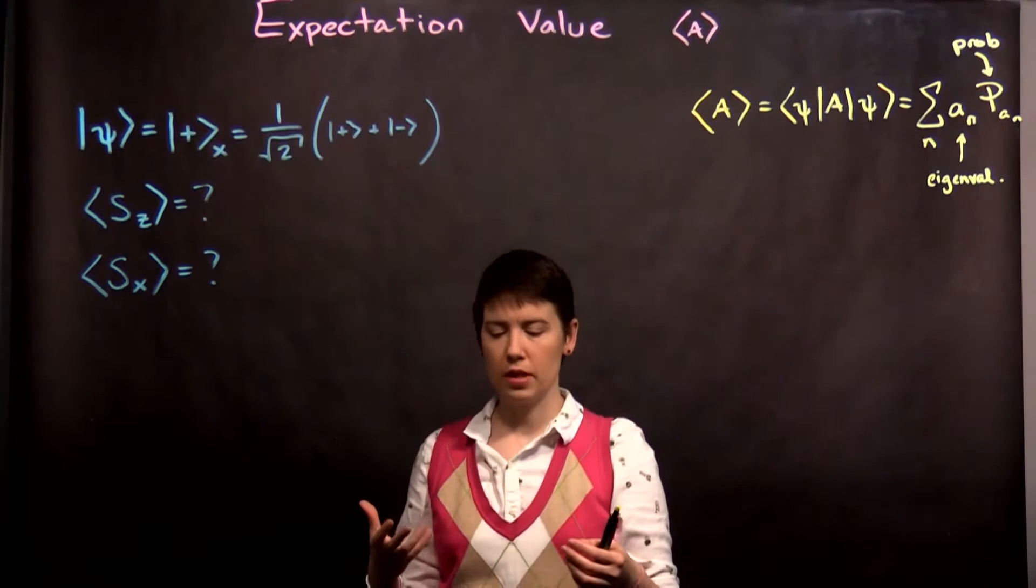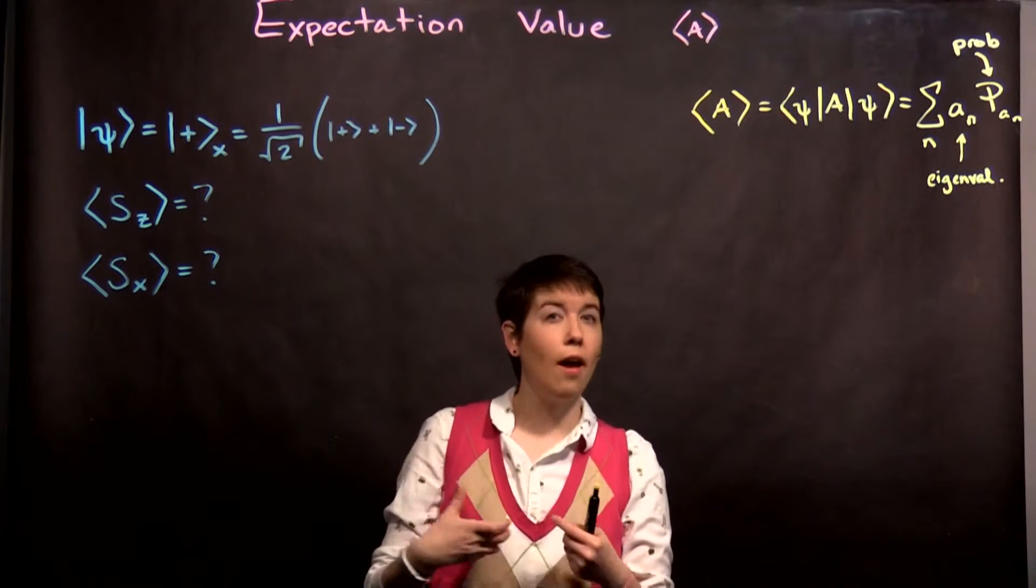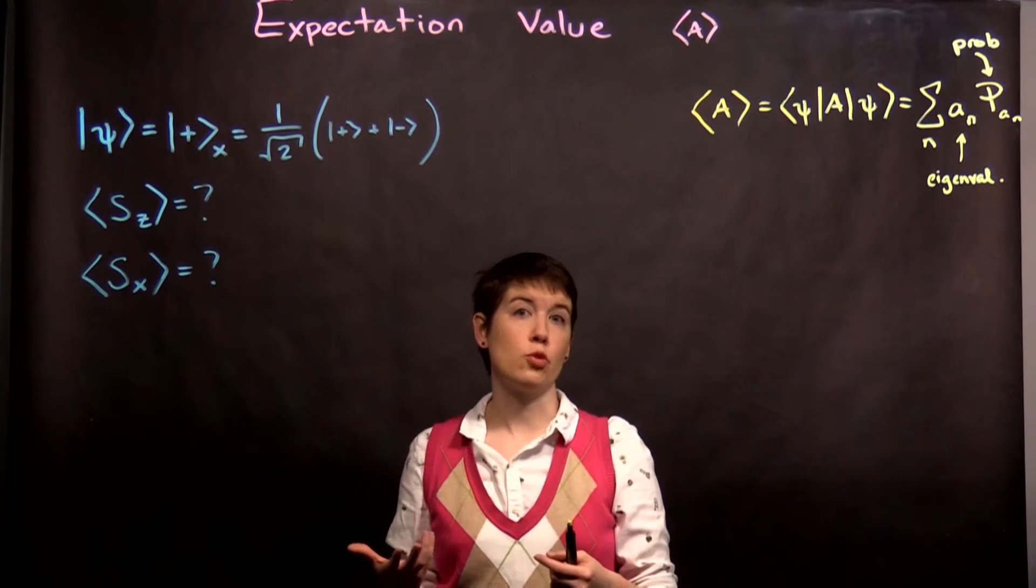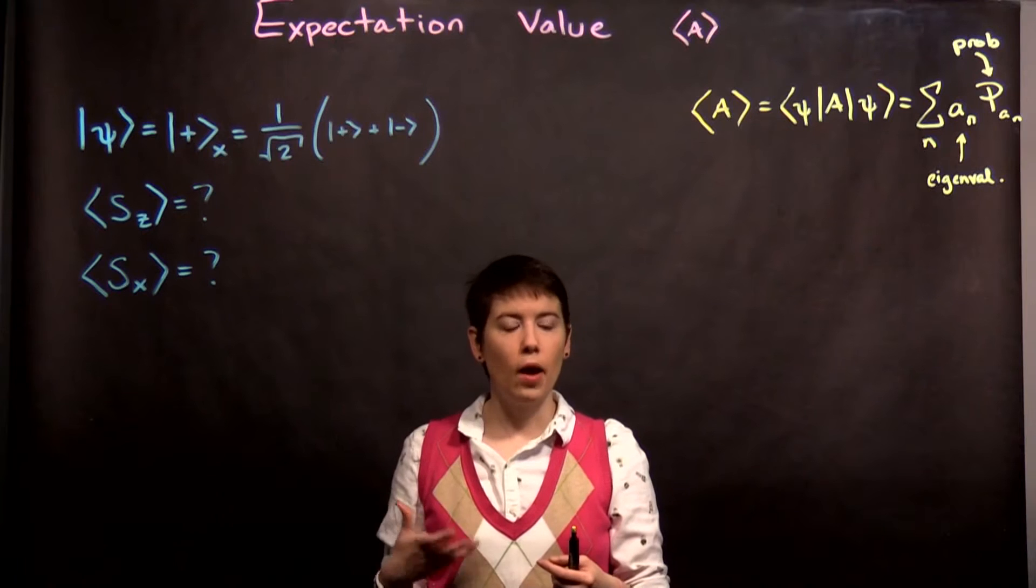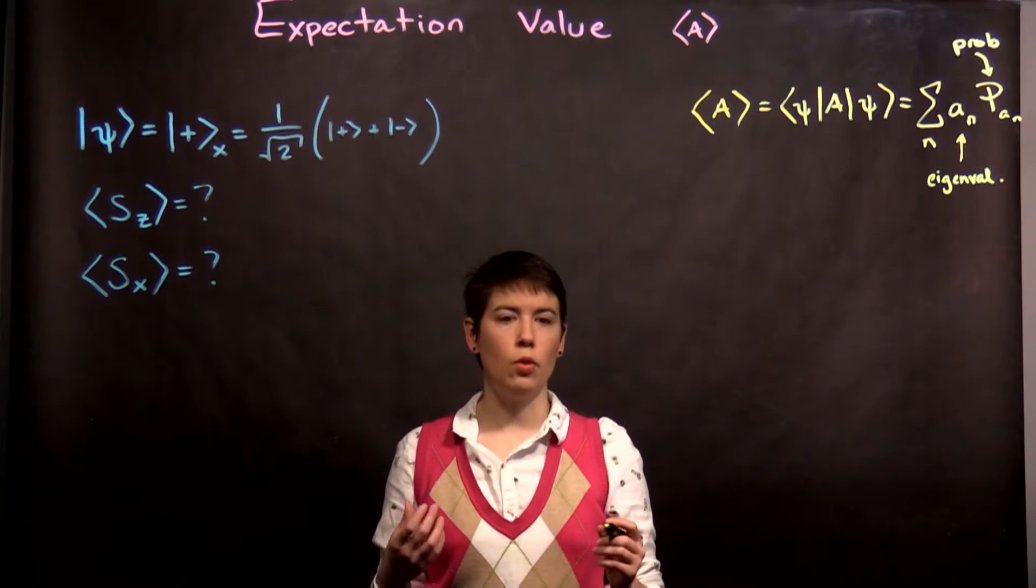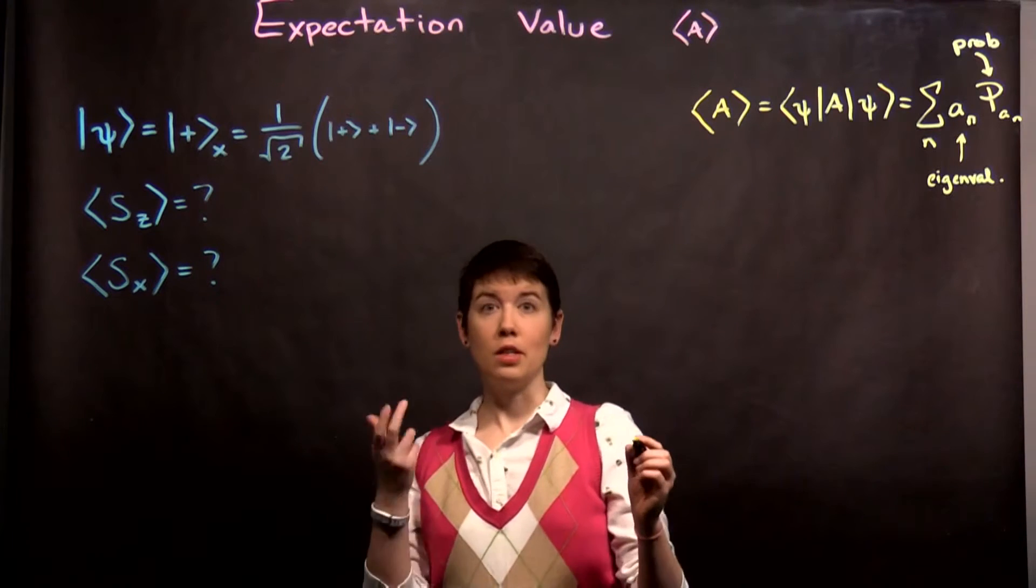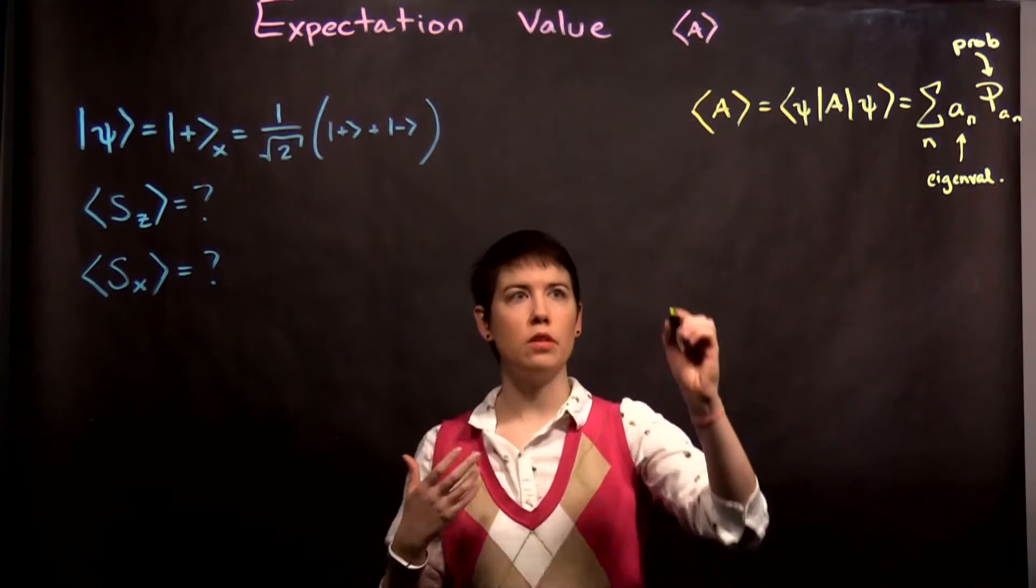What the expectation value is, is the average value of the measurement, but it might be different than any of the possible measurements itself. So as an example, let's work through a classical example, which is a die, or the probability of a dice.